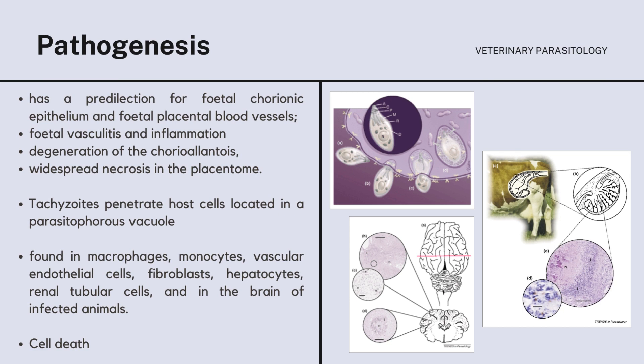Its pathogenesis is that the organism has a predilection for fetal chorionic epithelium and fetal placental blood vessels, producing a fetal vasculitis and inflammation and degeneration of the chorioallantois and widespread necrosis in the placenta. The tachyzoites penetrate host cells and are located in a parasitophorous vacuole. They can be found in macrophages, monocytes, vascular endothelial cells, fibroblasts, hepatocytes, renotubular cells, and in the brain of infected animals. Cell death is by the active multiplication of tachyzoites.